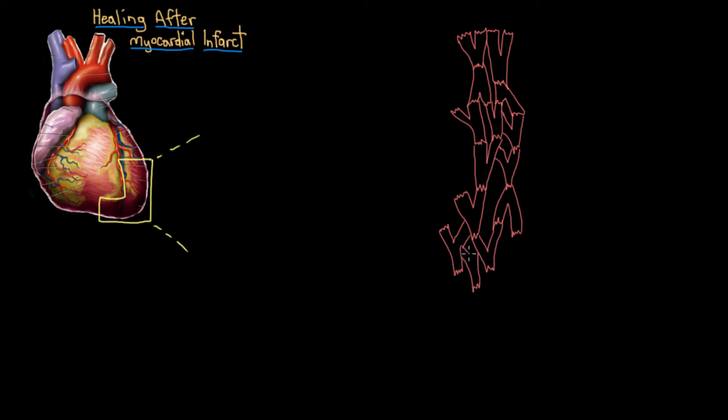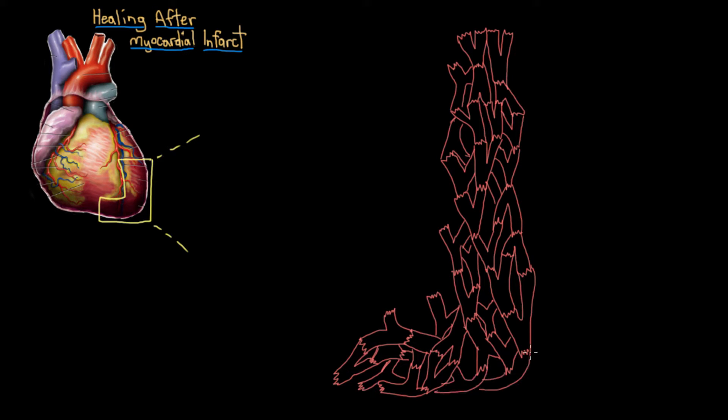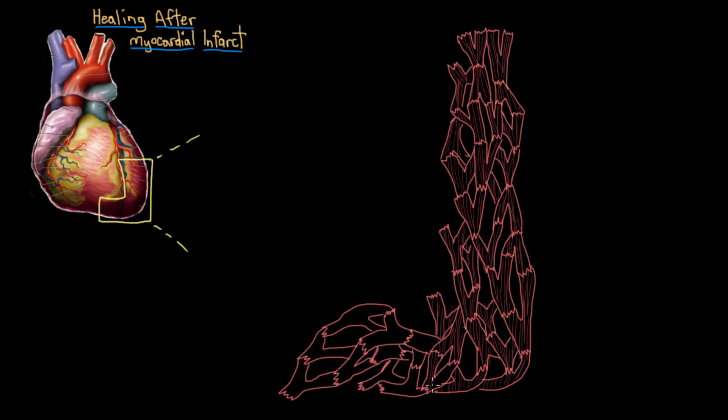So I'll draw in these cardiomyocytes, these heart muscle cells here. And these are the striations that they have because of their contractile proteins. And here are their nuclei. So we'll start off with this non-infarcted heart here with nice, intact muscle.